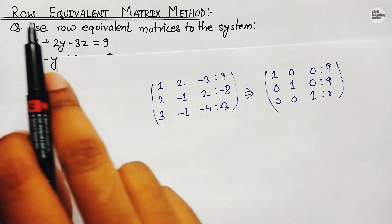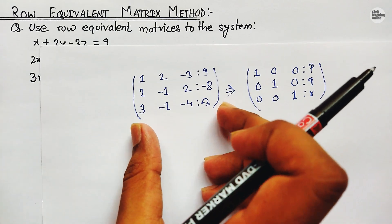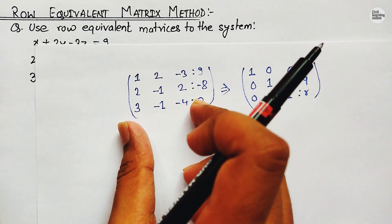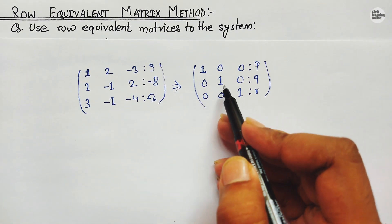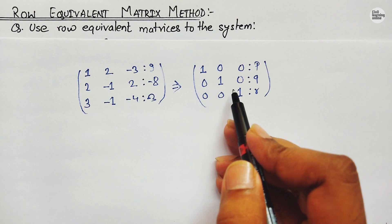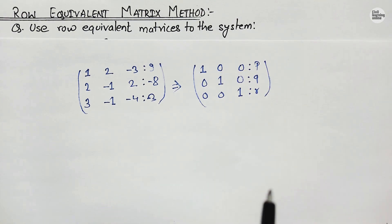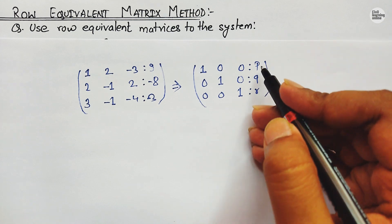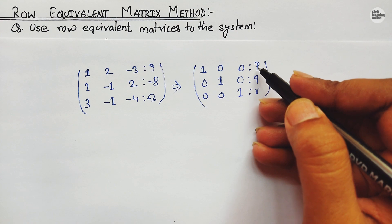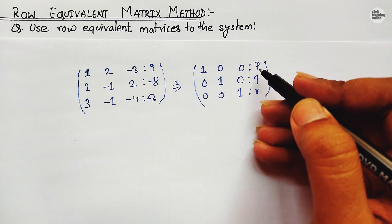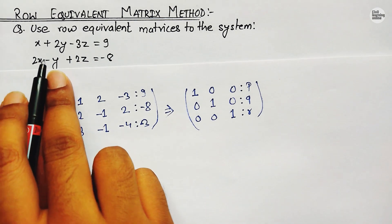In order to solve or find the value of x, y, and z using the Row Equivalent Matrix Method, we have to convert this augmented matrix into the identity matrix. That means all the diagonal elements will become unity or 1, and the remaining elements will be zero in the 3×3 matrix form. We will get some values on the other side of the two dots, represented as p, q, r, and those will be the values of x, y, and z.